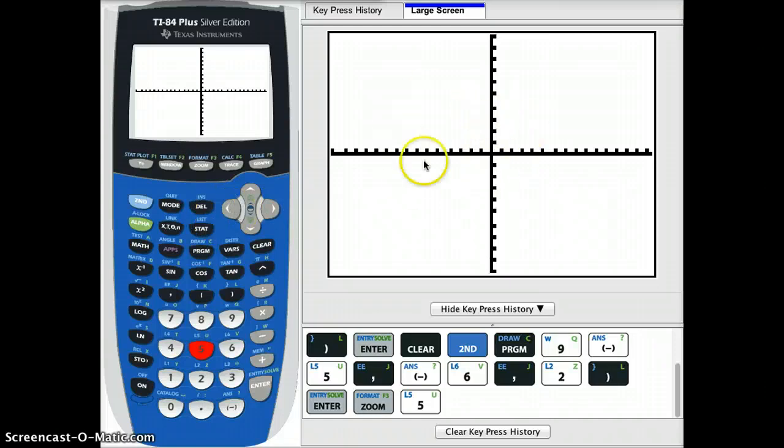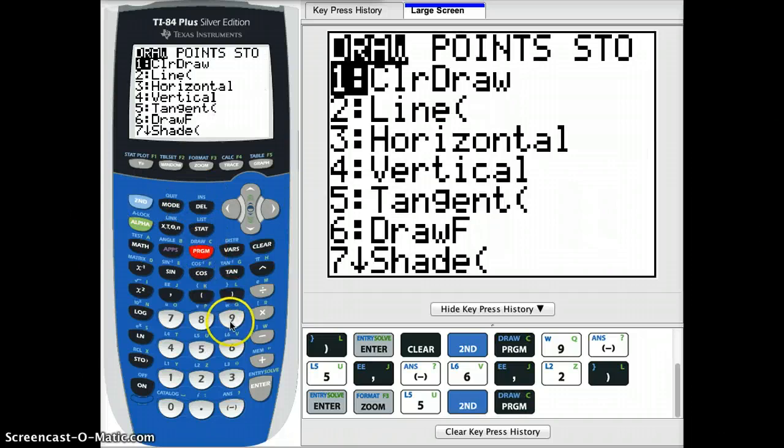Now you can also graph circles from the graph screen itself. From the graph screen, I'm going to press 2nd, program, number 9 again.